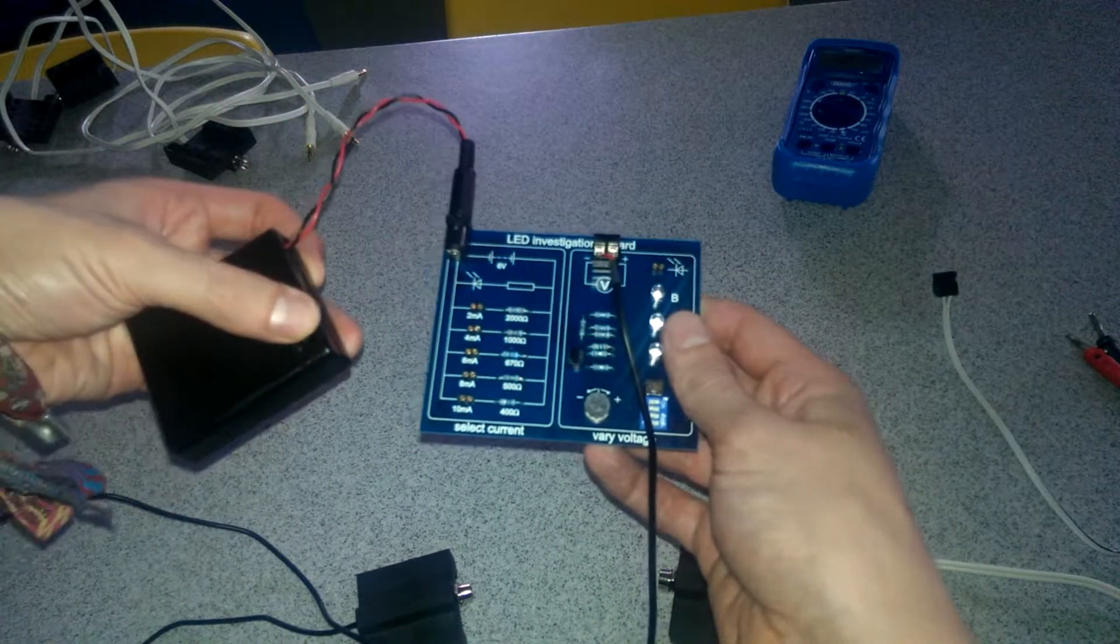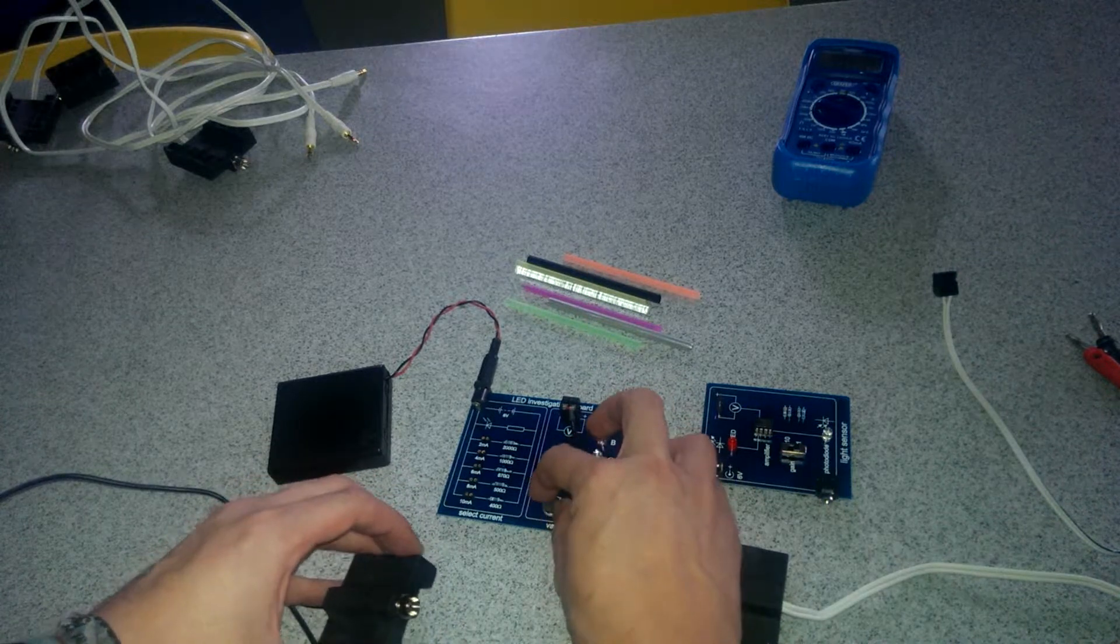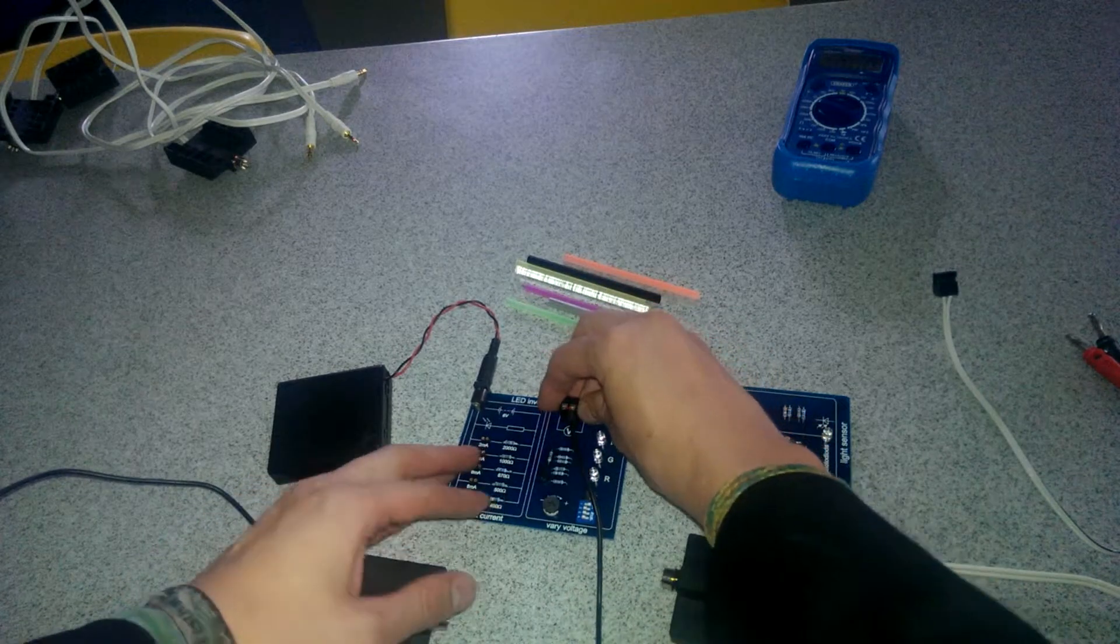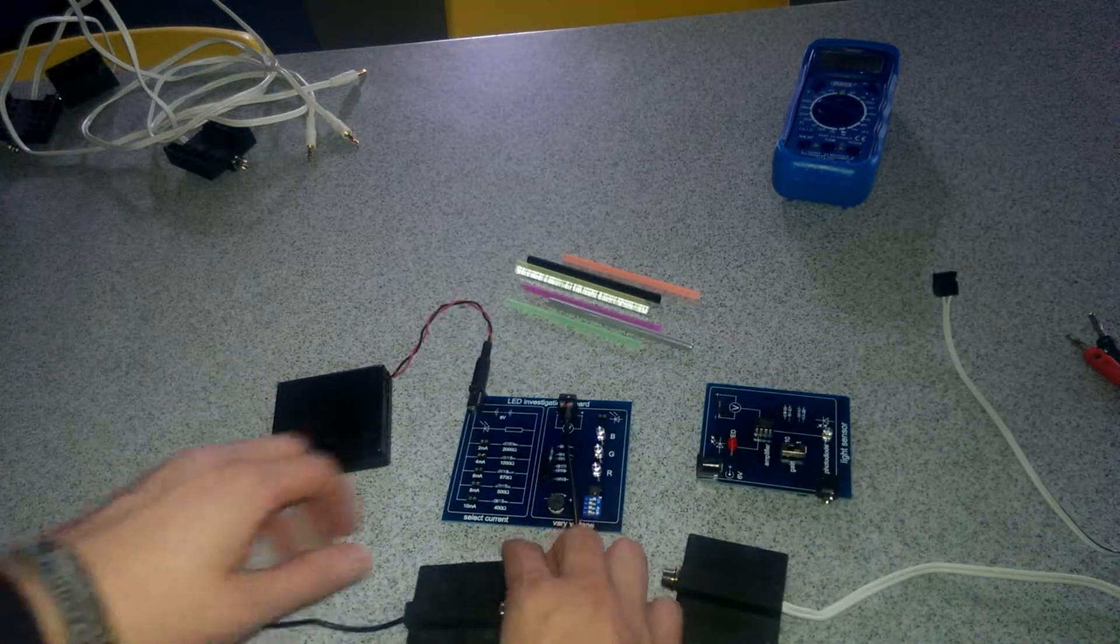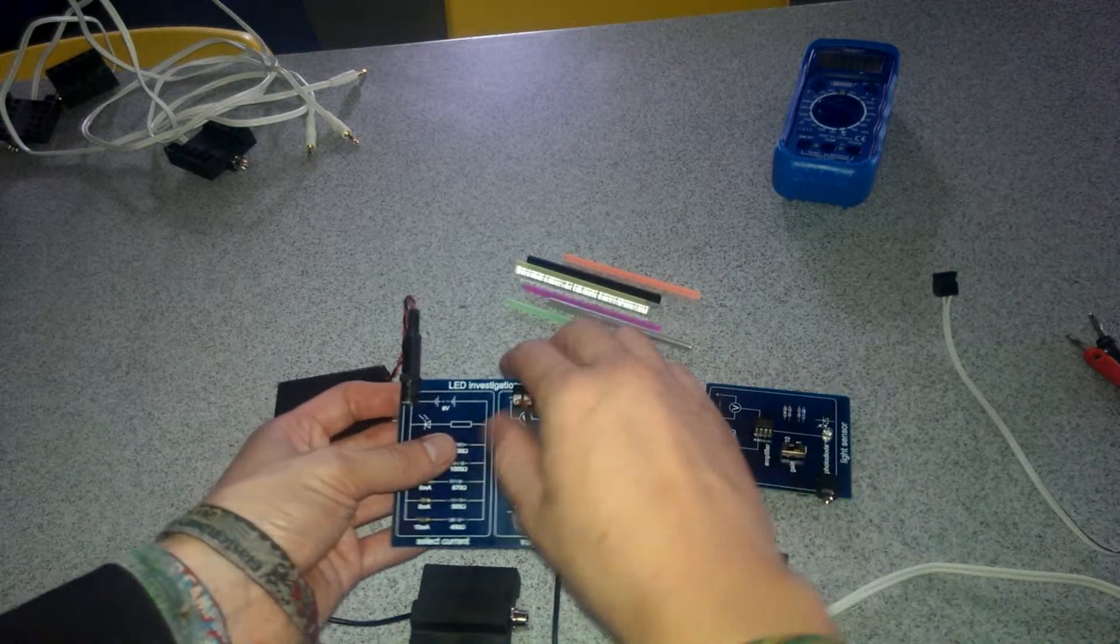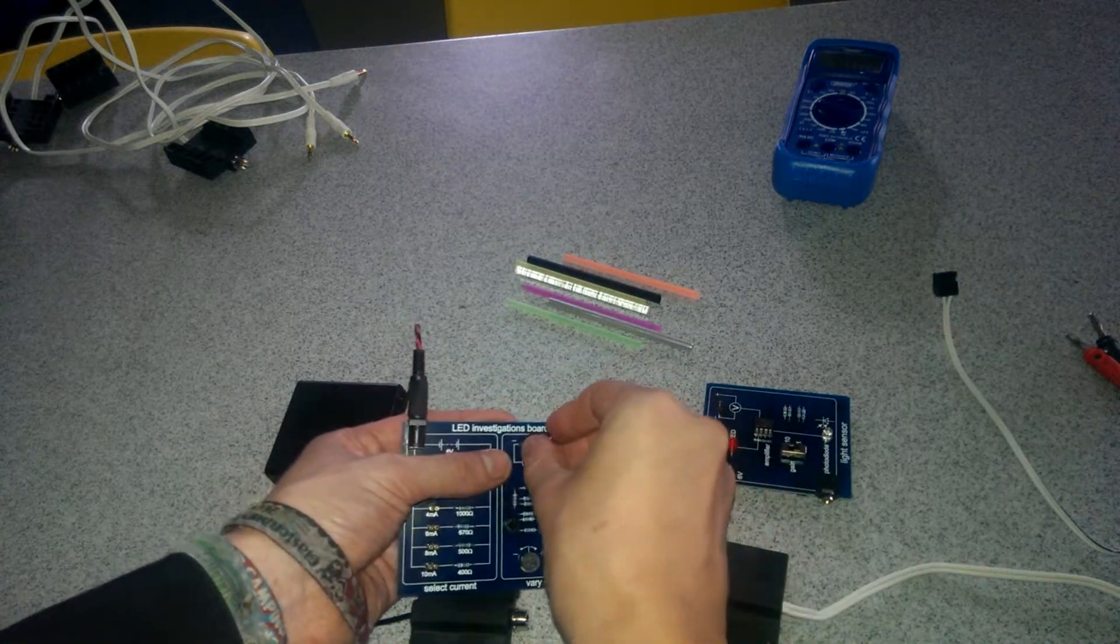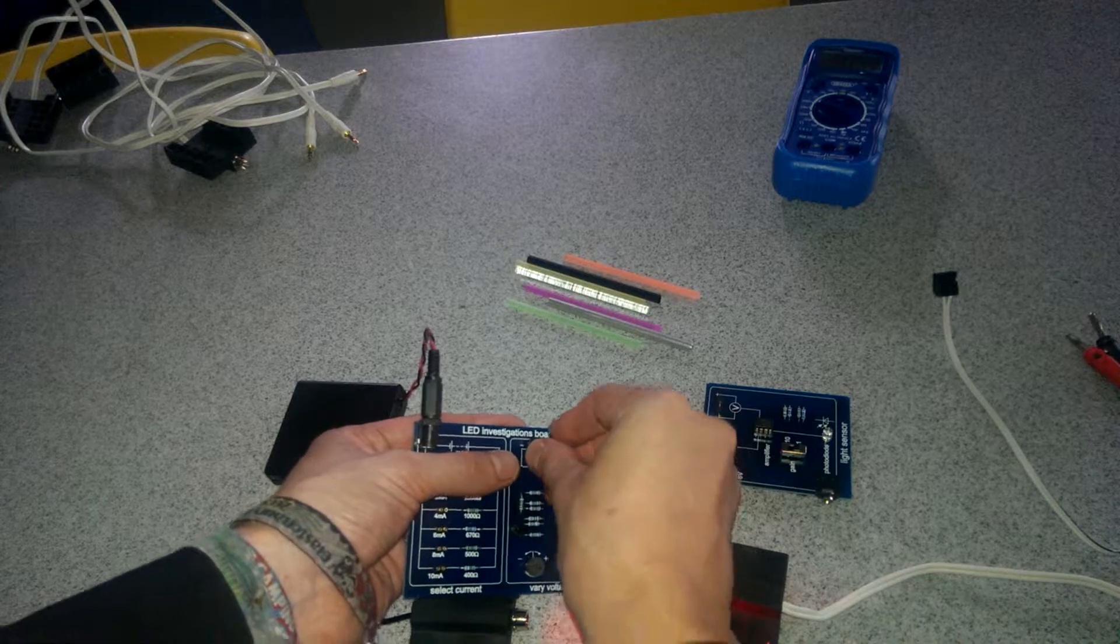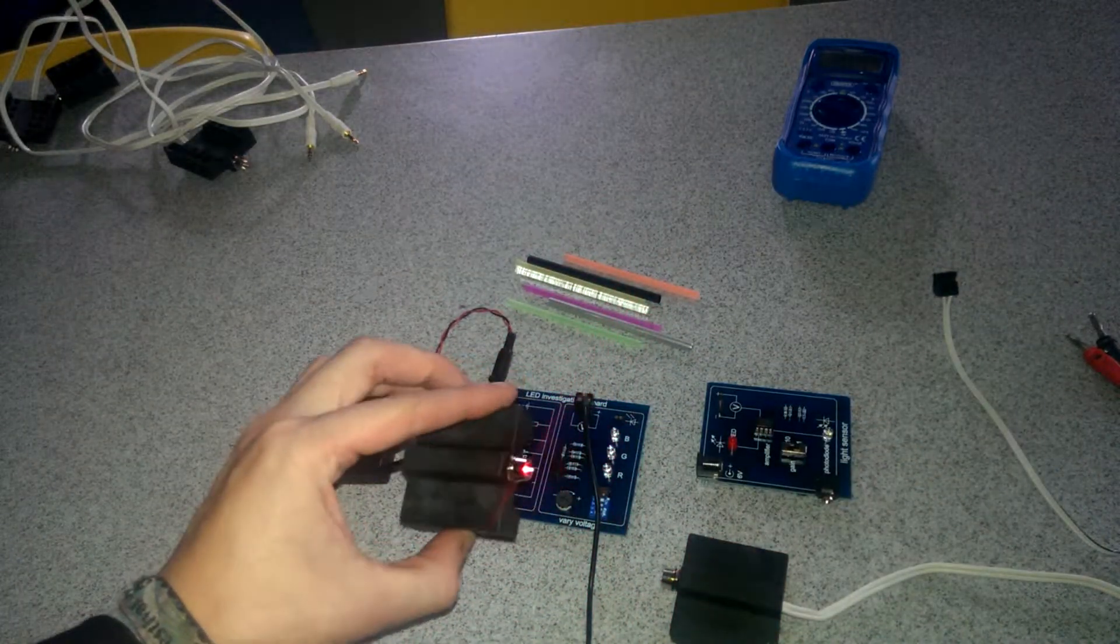When you turn the battery pack on you may be able to adjust the voltage and provide light coming out of the LED. If that doesn't work you need to take the connector from the LED out of the board and turn it round. It only works one way round so work out which way it is. There we go and now you can see red light coming out of the LED.